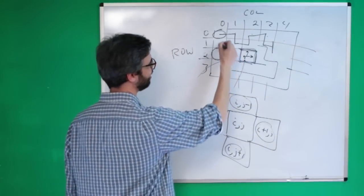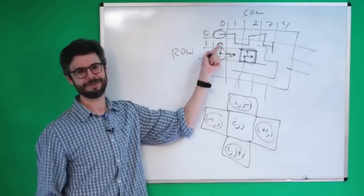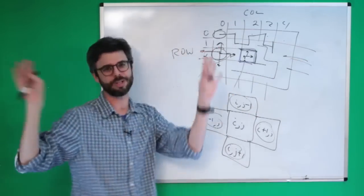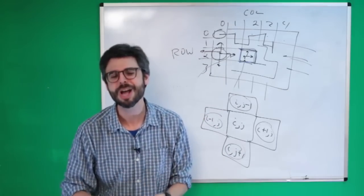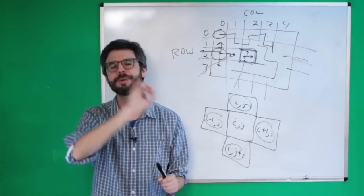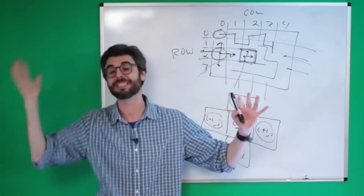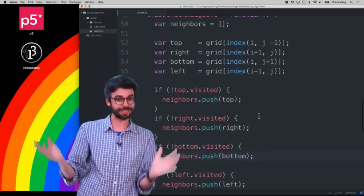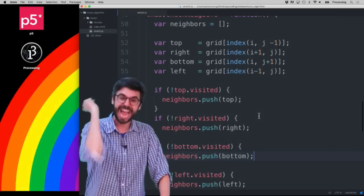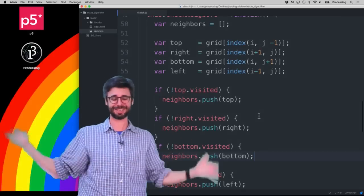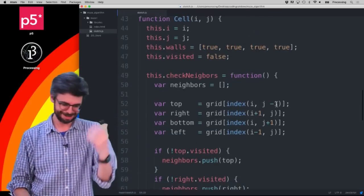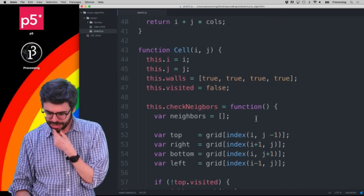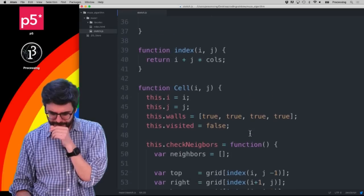On the edge, there's no neighbor on one side, and I don't want wrap-around behavior. I need to make sure the neighbor I'm looking for isn't at a negative index or past the width. These are edge cases — literally, because they're on the edge of the grid.